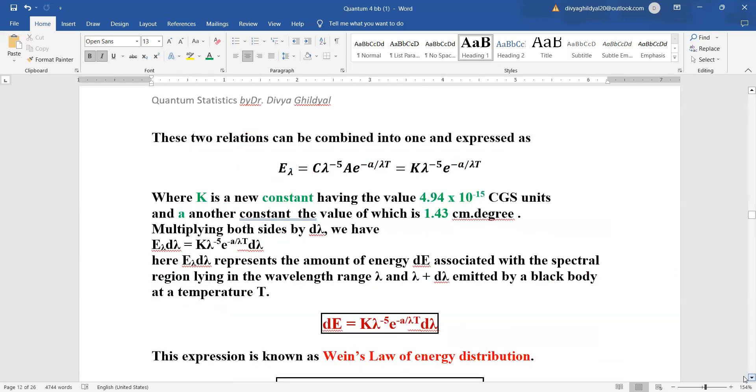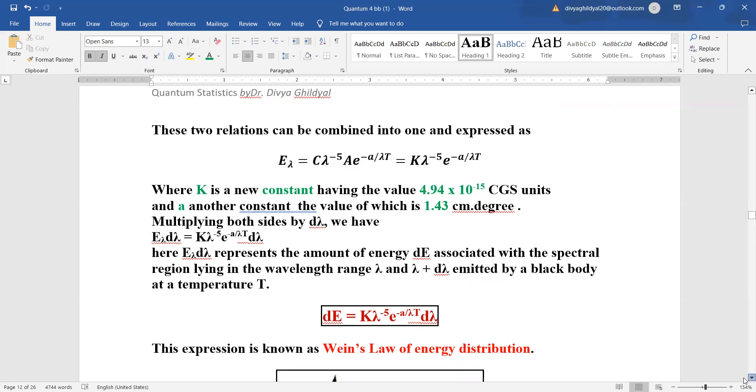Now we will combine these two relations and express them as e or energy at specific wavelength lambda is equal to k which is a constant having a value of 4.94 into 10 to the power of minus 15 lambda to the power of minus 5 e to the power of minus a which is also a constant divided by lambda t. Multiplying both sides by d lambda we are just trying to simplify this expression so that we get an expression in a more simple form where we can see the variation of energy with temperature and wavelength and then we can plot the same.